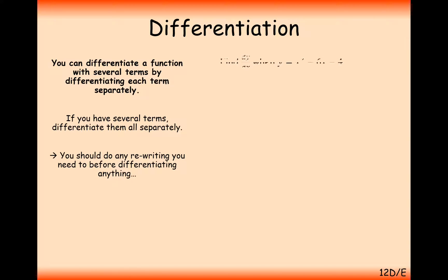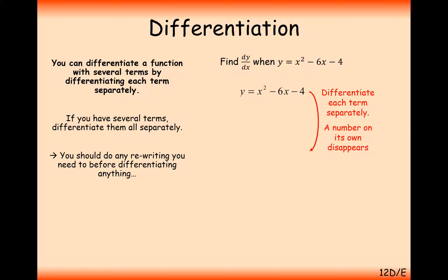When you differentiate an expression such as y equals x squared minus 6x minus 4, you differentiate each of the components separately and then add the results together, or subtract them if they have negatives in front of them. So x squared would differentiate to 2x, minus 6x would differentiate to minus 6, and the minus 4 would differentiate to 0.